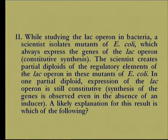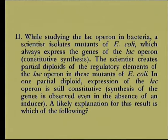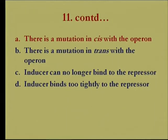Another question: a scientist isolates E. coli mutants which always express genes of the lac operon constitutively. The scientist creates partial diploids of the regulatory elements in these mutants. In one partial diploid, expression of the lac genes is observed even in the absence of an inducer. The options are: a mutation in cis with the operon, a mutation in trans with the operon, the inducer can no longer bind to the repressor, or the inducer binds too tightly to the repressor. Constitutive expression occurs when the operator is not recognized by the repressor.